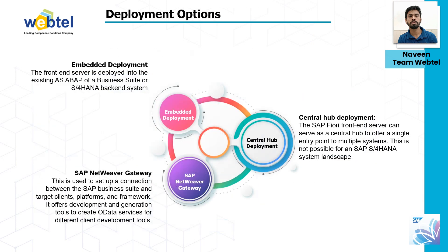Here are some SAP Fiori deployment options. Embedded deployment: the front-end server is deployed into the existing ABAP of a Business Suite or S/4HANA backend system. Central hub deployment: the SAP Fiori front-end server serves as a central hub to offer a single entry point to multiple systems, though this is not possible for SAP S/4HANA system landscapes. SAP NetWeaver Gateway: used to set up a connection between SAP Business Suite and target client platforms, offering development and generation tools to create data services. Each of these deployment options addresses specific use cases and architectural requirements within an organization's SAP landscape, providing flexibility to best meet business requirements.